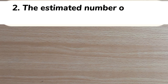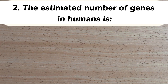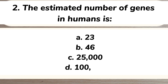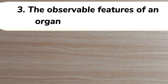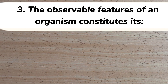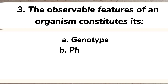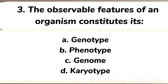Number two: the estimated number of genes in humans is A) 23, B) 46, C) 25,000, D) 100,000. Answer: C) 25,000. Number three: the observable features of an organism constitutes its A) genotype, B) phenotype, C) genome, D) karyotype.